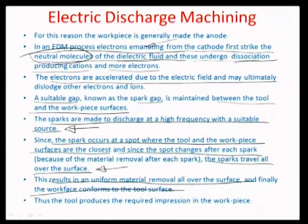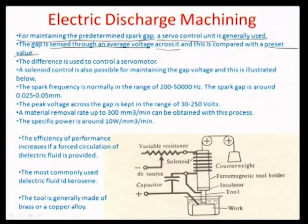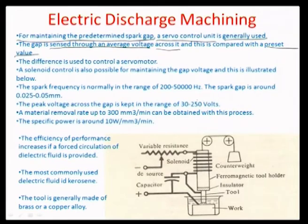The spark frequency is normally in the range of 200 to 50,000 Hz. It is an atomistic process dependent on how many hills and valleys are facing each other as the tool is fed toward the workpiece. The tool can have close to micrometer lateral displacement due to the high pressure of the dielectric fluid in the gap. Controlling spark frequency is not possible since it is determined at the atomistic level by small movements between the two surfaces.